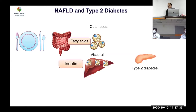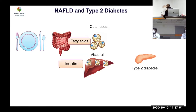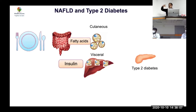Fatty liver probably causes insulin resistance, which ultimately results in type 2 diabetes. However, when linking fatty liver with diabetes, there's always a question: is insulin resistance driving the fatty liver, or is the fatty liver driving the diabetes? One hypothesis says excess fat deposited in the liver causes insulin resistance, leading to diabetes.